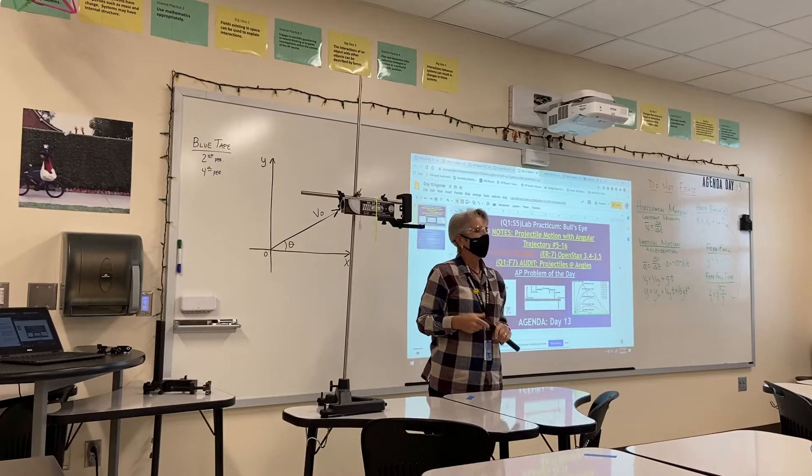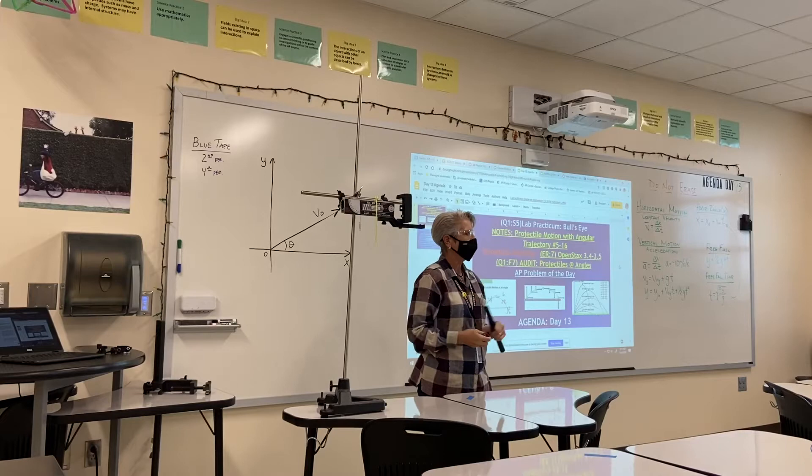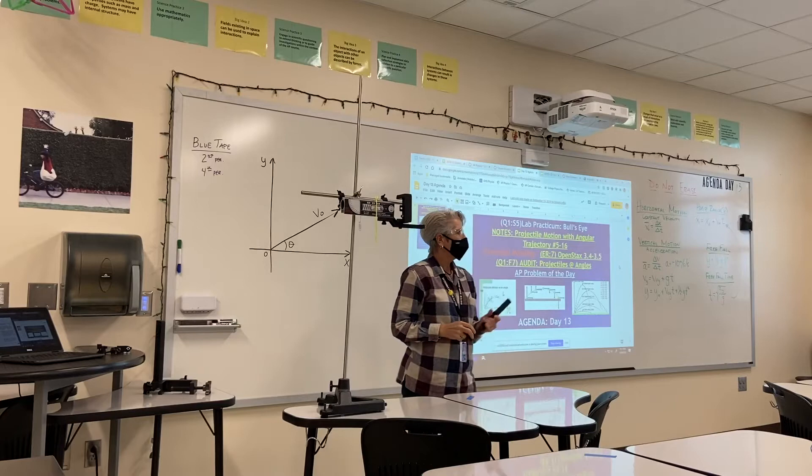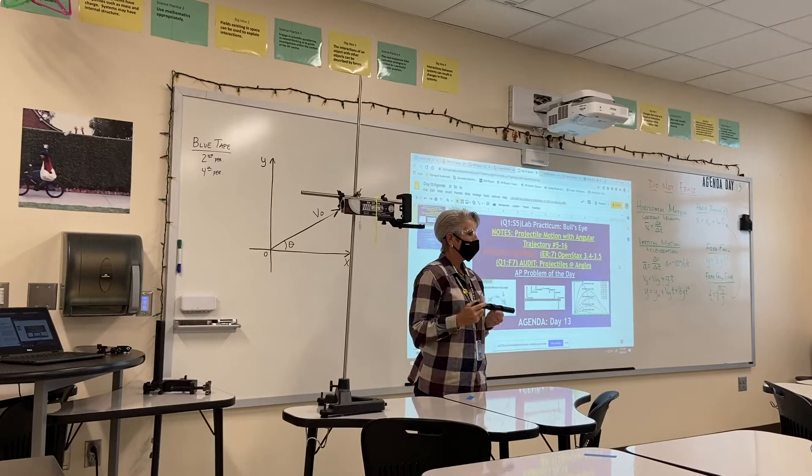If it knows the distance the ball covered and the amount of time it took, what can it find? Velocity. Exactly. So this will allow us to determine the velocity of the ball immediately when it leaves the launcher. Now, is this velocity horizontal or vertical when it first comes out? Horizontal.